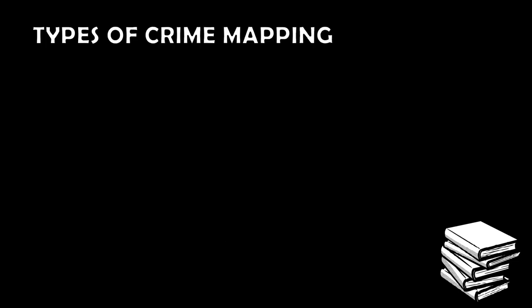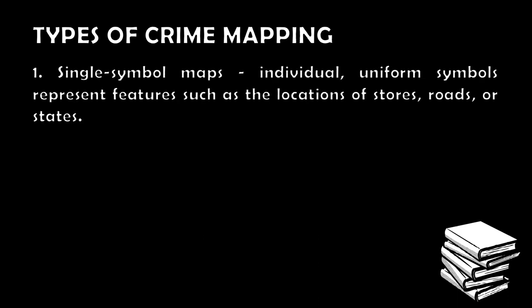What are the types of crime mapping? First is single symbol maps, where individual uniform symbols represent features such as the location of stores, roads, or states. There are signs indicating: this area is a store, this is a road, this is a church, this is a residential house, this is a commercial house. Next is buffer — a specified area around a feature on a map. The buffer can set small distances, meaning in crime mapping, since actual distances are very large, the buffer is just the representation of the distance between each structure or property.